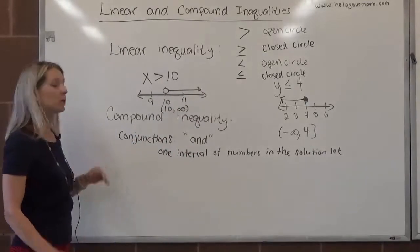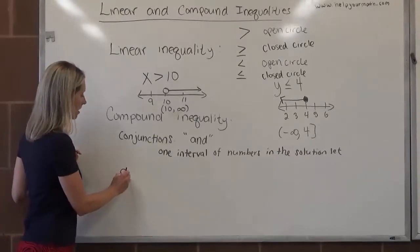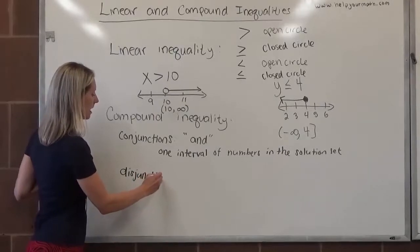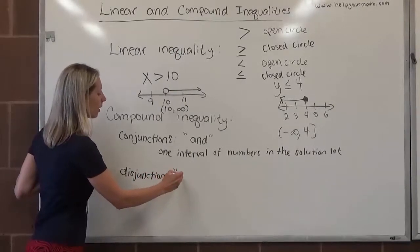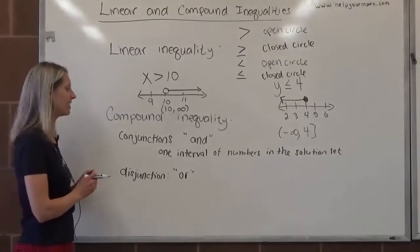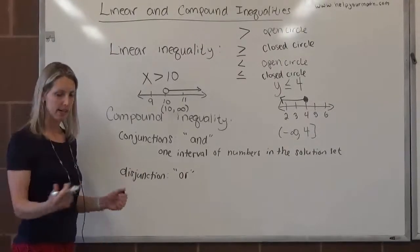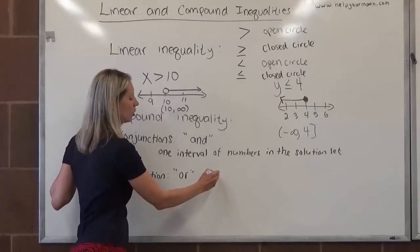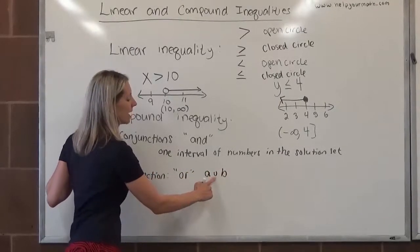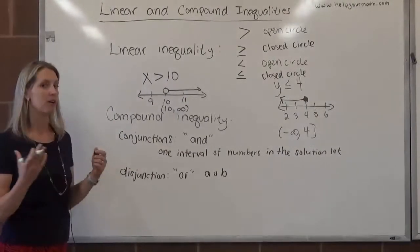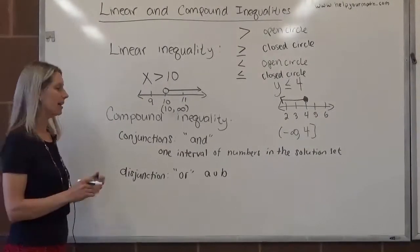The alternative to a conjunction is a disjunction. For a disjunction, that's associated with the word or. This symbol is important. We do want to know the symbol for a disjunction. In set theory, we use a cup, and we would say A union B. That symbol looks like a U without the little front tail. That would be our disjunction symbol.